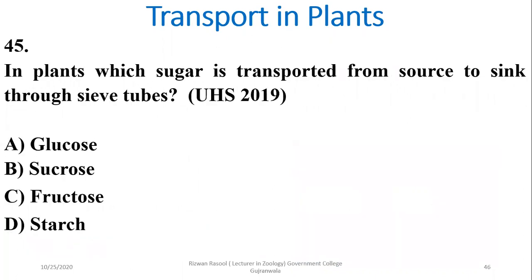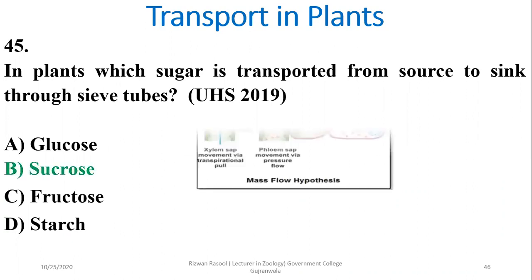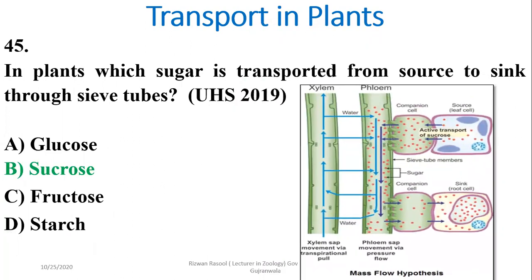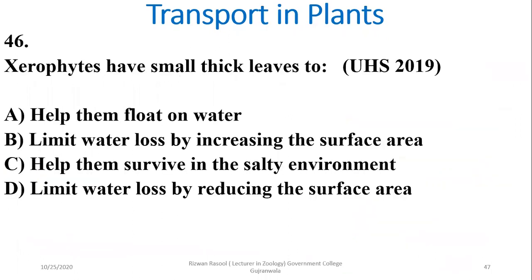Question 45: In plants, the sugar transported from source to sink through sieve tubes is sucrose, which is the main transportable sugar within plants.